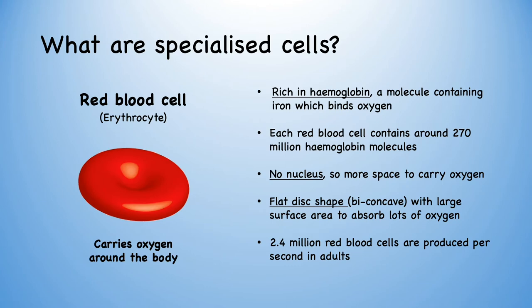One type of specialised cell is a red blood cell, or normocyte. These carry oxygen around the body and have many specific features which make them good at their function. For example, they're rich in haemoglobin, a molecule containing iron which binds to oxygen — each red blood cell contains around 270 million of these molecules. Red blood cells also have no nucleus, so they have more space to carry oxygen. They're a flat disc shape, or biconcave, with a large surface area to absorb lots of oxygen. There are 2.4 million red blood cells produced every second in adults.